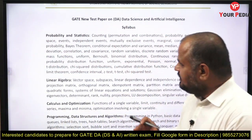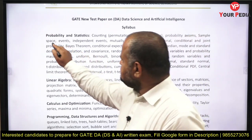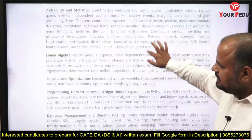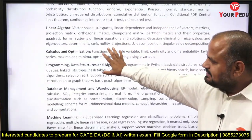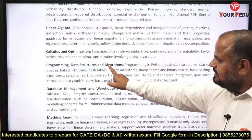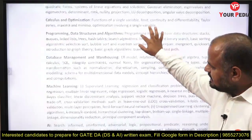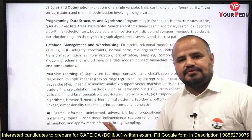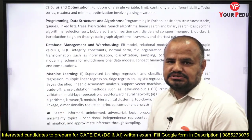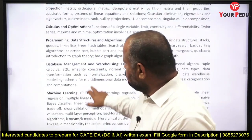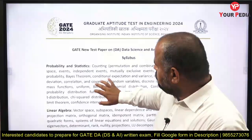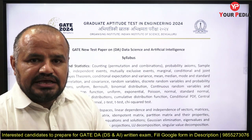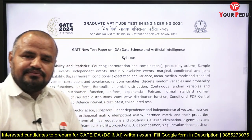The subjects covered are: first, probability and statistics; second, linear algebra; third, calculus and optimization; fourth, programming, data structures, and algorithms; fifth, database management system and warehousing; and sixth, machine learning as well as AI. GATE 2024 has already launched Data Science and AI as a new paper.